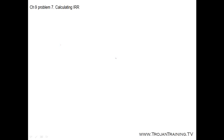Problem 7, Chapter 9 asks to calculate the internal rate of return. We have an initial investment of $34,000 and then cash flows for the next three years. The required rate is 16% and the problem asks if the firm should accept the following project.